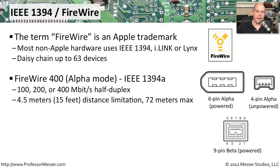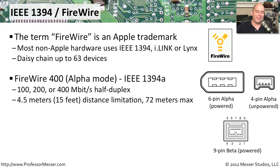The maximum total distance is 72 meters. Each one of these FireWire devices is a repeater, so you can have a cable that's 15 feet, then a FireWire device, then another cable that's 15 feet, and another FireWire device — all the way up to 63 different devices. The total distance across all of those is a maximum of 72 meters, so you may not be able to do 4.5 meters for every single one. As long as you stay within 72 meters maximum, you'll be able to use FireWire 400.